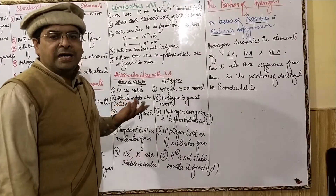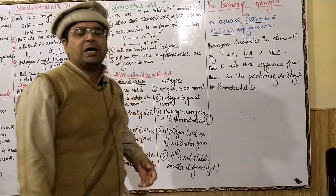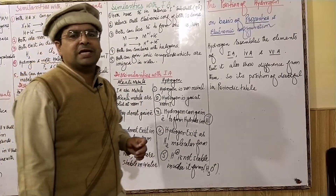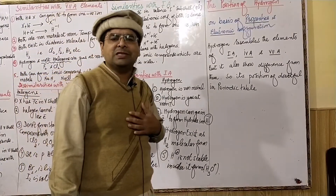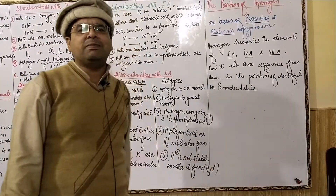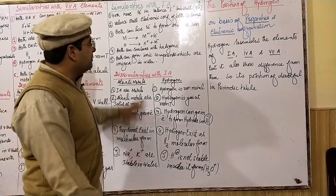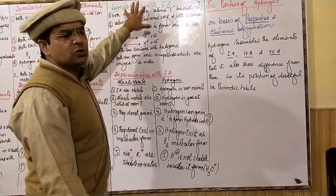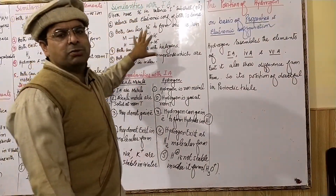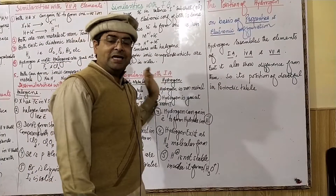When NaCl is placed in water, it forms ions: Na⁺ and Cl⁻. Similarly, HCl also forms ions in water. These are the similarities of hydrogen with 1A elements, but there are also differences from 1A.